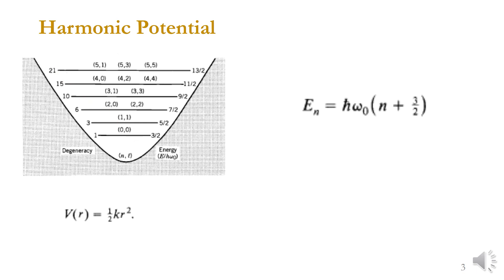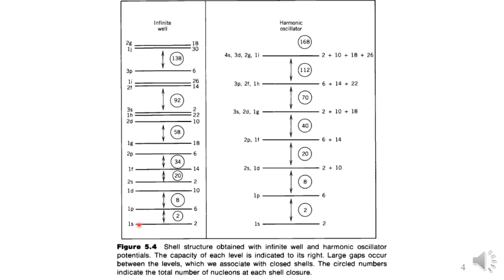Comparing the two models — the infinite well model and the harmonic oscillator model — we can see their predicted energy levels. The s orbital contains 2, then p contains 6, d contains 10, then 2 for the next s, f contains 14, and so on, just like the electronic shell structure.